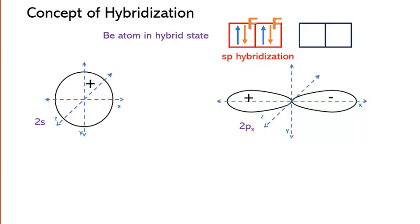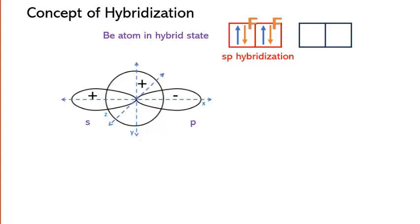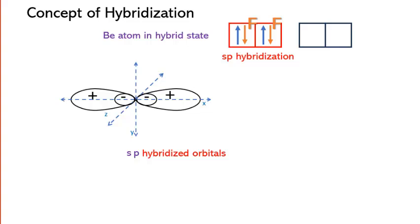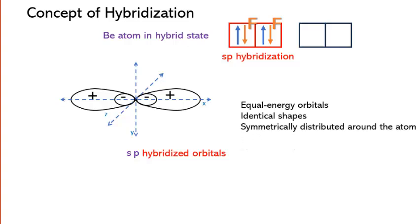Let us consider the second scenario and the need to have hybridized orbitals. When beryllium's 2s and 2px orbitals mix, that means their wave functions interfere constructively, they form two equivalent sp hybrid orbitals. These hybrid orbitals have the same energy, similar shape, and they are symmetrically distributed around the central atom beryllium.